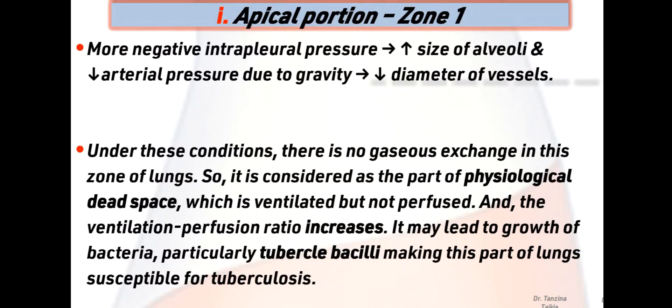More negative interpleural pressure increases the size of the alveoli and decreases the arterial pressure due to gravity, which decreases the diameter of the vessels. Under this condition, there is no gas exchange in this zone of the lung. So it is considered as part of physiological dead space, meaning it is ventilated but not perfused, and the ventilation-perfusion ratio is also increased. This may lead to growth of bacteria, particularly tubercle bacilli, making this part of the lung susceptible to tuberculosis.